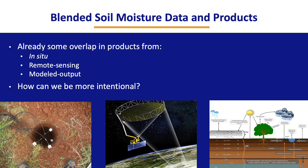That's a quick overview of modeled soil moisture data and products. To finish, blended soil moisture data and products blend all three legs of our stool to provide our soil moisture information system. As you can infer, there's already some overlap where modeled output uses data assimilation and other techniques to bring in observational data, and remote sensing satellite outputs are fed to models. The question is how we can be more intentional about this process — which is one of the objectives of our initiative to build blended products that truly take advantage of each leg of our stool.